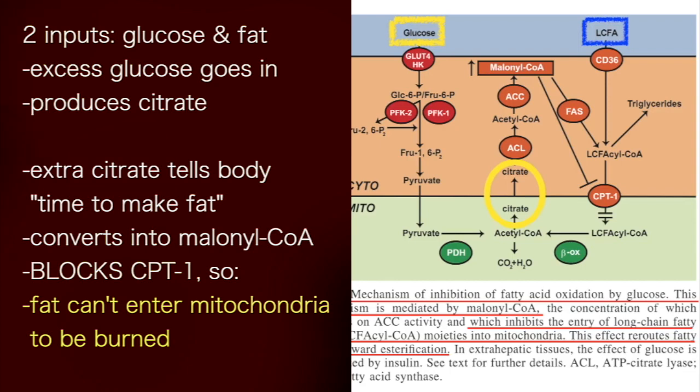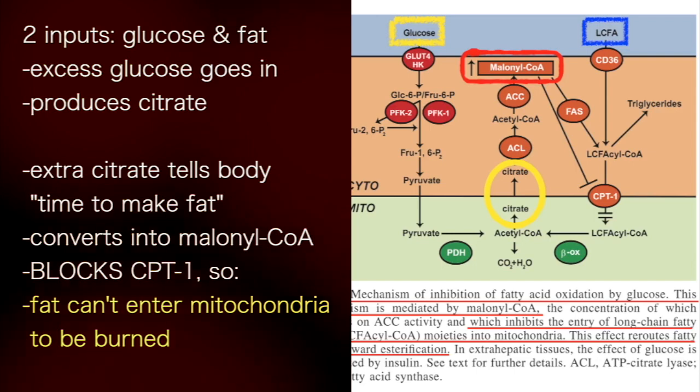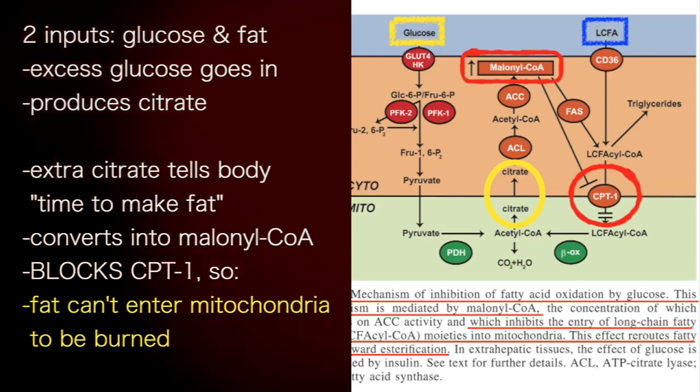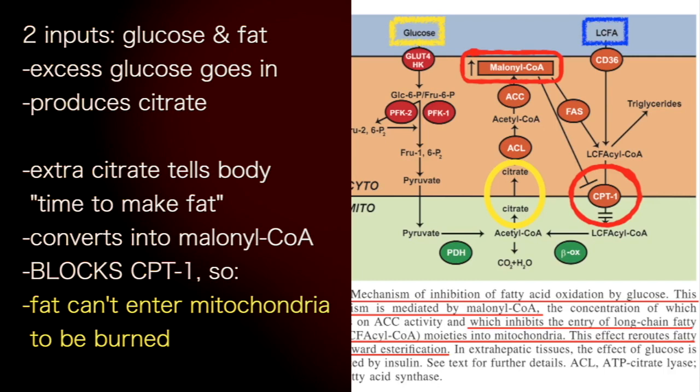And because there's extra citrate, your body knows it's time to make fat instead of burning fat. So your cell is going to make fat. It converts it into malonyl-CoA. That literally blocks carnitine palmitoyl transferase 1, CPT-1. And fat actually physically cannot enter your mitochondria to be burned when malonyl-CoA is elevated.